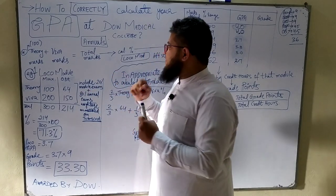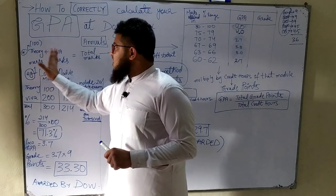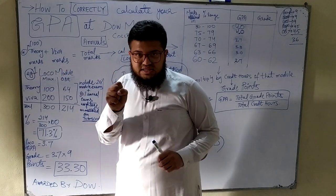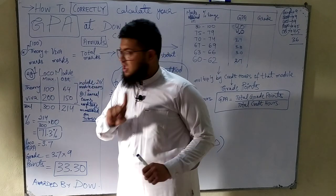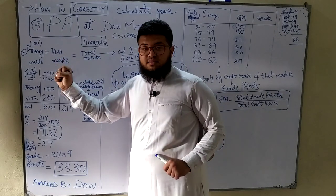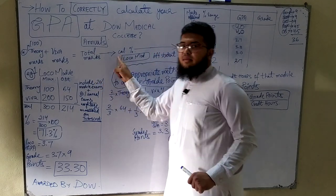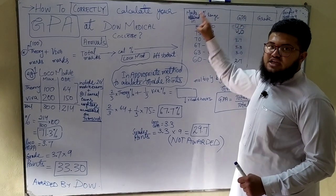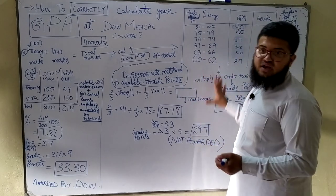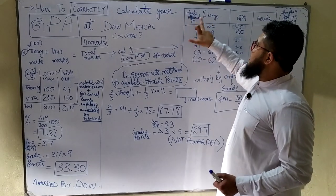Now let's come to our main objective: how to calculate GPA. You have theory marks and viva marks. Whatever marks come in theory and viva — remember I am using the term marks, not percentages — you add them together and get total marks. Then using total obtained marks and total maximum marks combined, you calculate a percentage. Whatever percentage you get, you then compare it against a table that DAO provides — it is printed on your transcript itself.